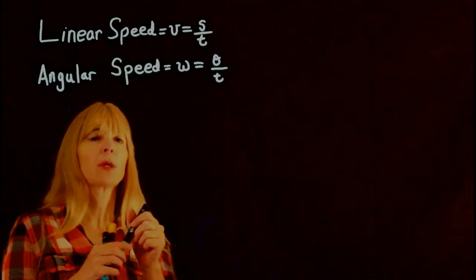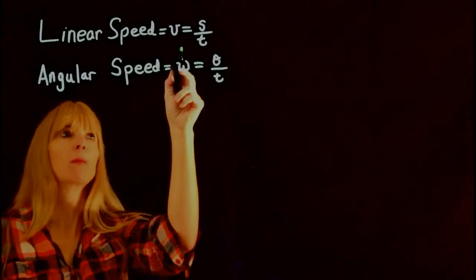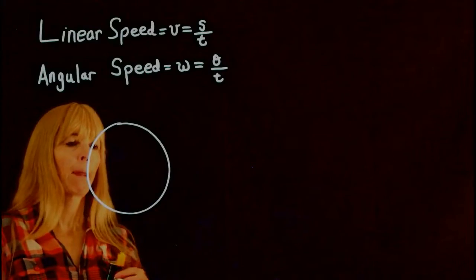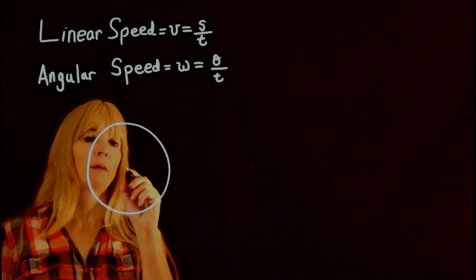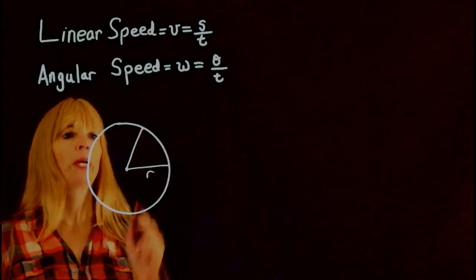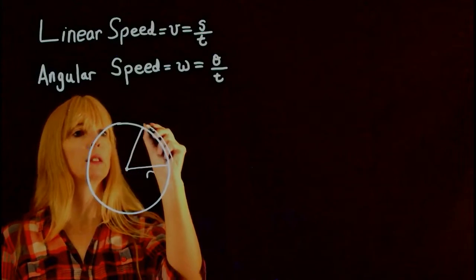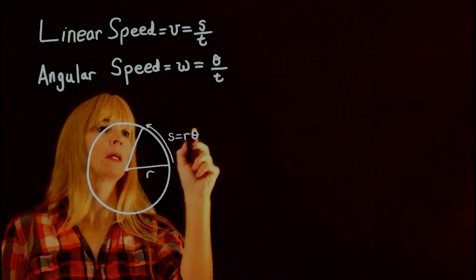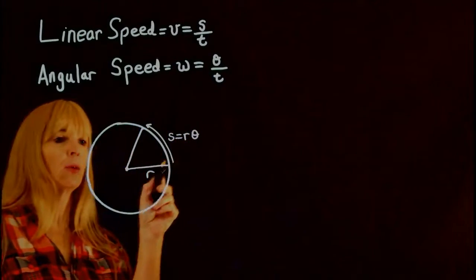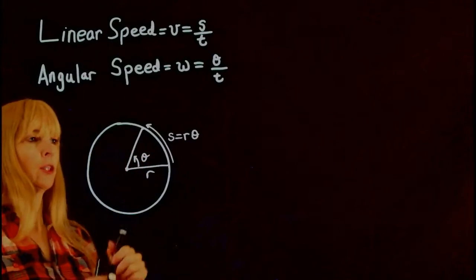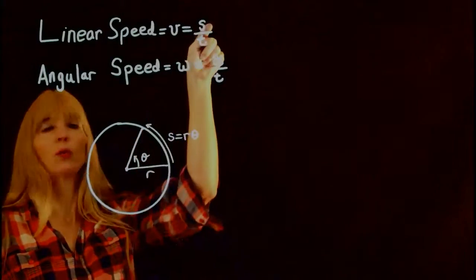What we're talking about with this formula here is if we have our circle and we have a radius and then we go some certain distance, we know from our arc length formula that s equals r theta.